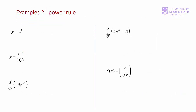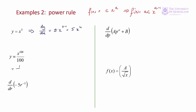Combining the constant and power rules: if f(x) = c·x^a, then f'(x) = a·c·x^(a-1). In the first example, with c = 1 and a = 5, dy/dx = 5·x^(5-1) = 5x^4. In the second example, we rewrite x^100 / 100 as (1/100)·x^100, so dy/dx = (1/100)·100·x^(100-1) = x^99.